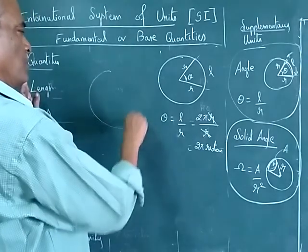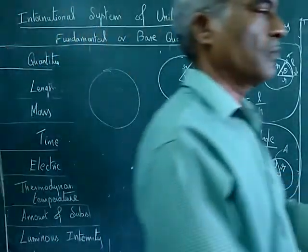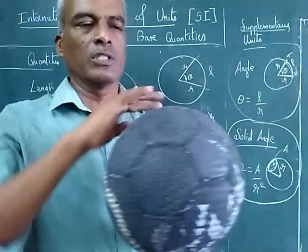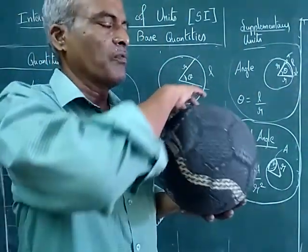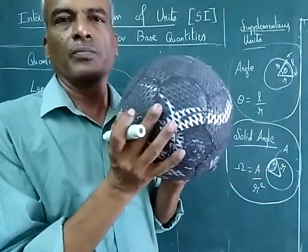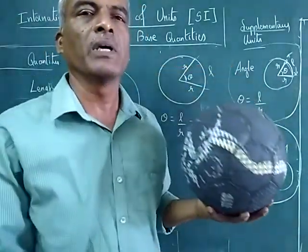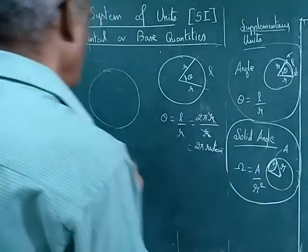Assume as sphere. Now sphere means this. Assume this is sphere. The full area of the sphere is 4 pi R square.